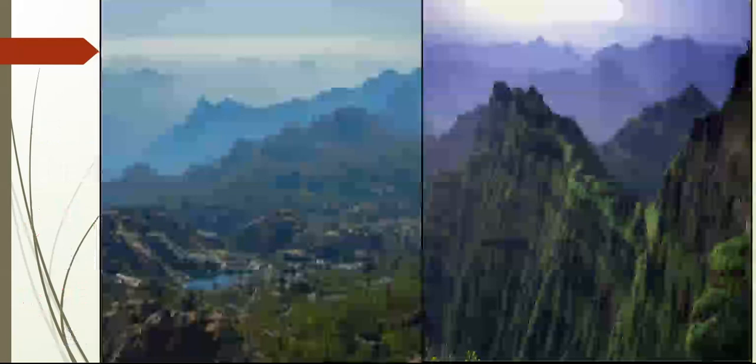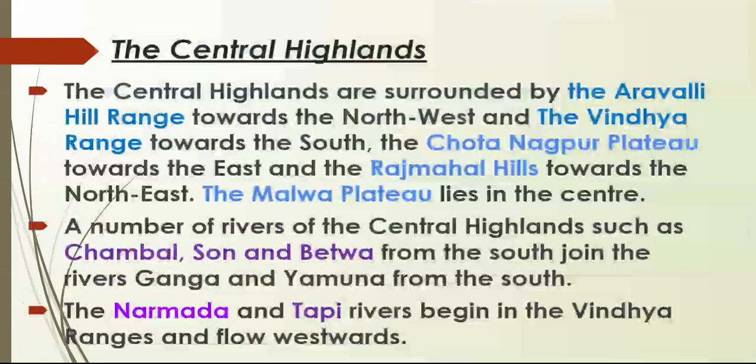This is the beautiful valley of the plateau region, and on the left hand side you can see River Narmada. Now let's talk about the Central Highlands. The Central Highlands are surrounded by the Aravalli hill range towards the northwest, the Vindhya range towards the south, the Chota Nagpur Plateau towards the east, and the Rajmahal Hills towards the northeast. The word 'surrounded' means it is covered from all four sides.